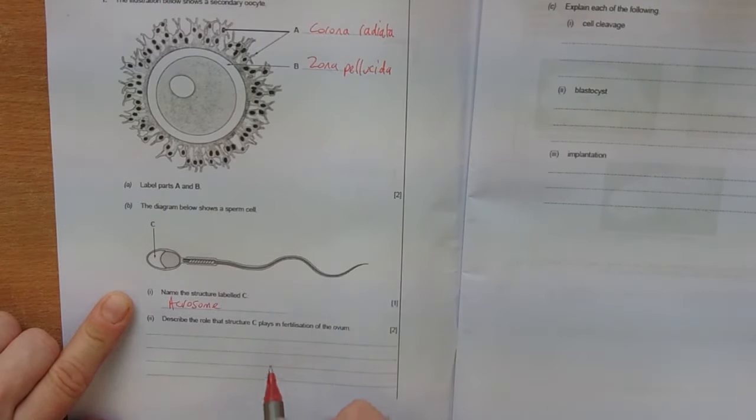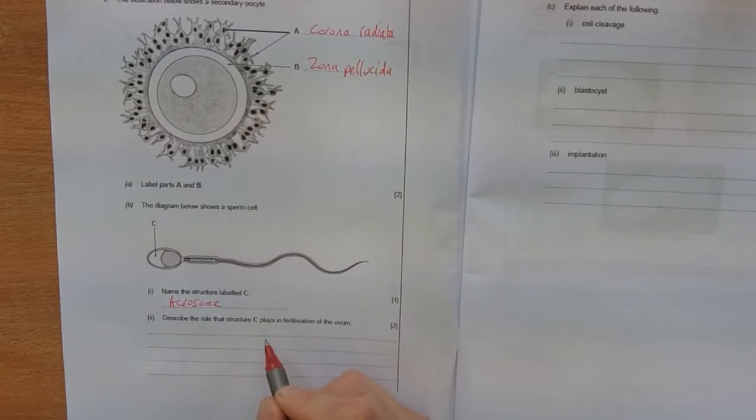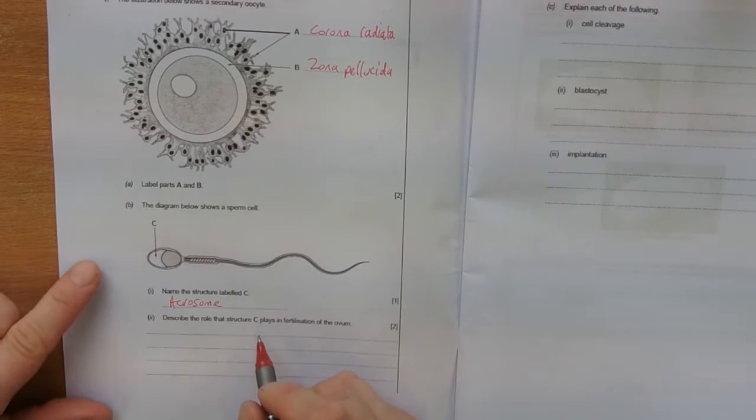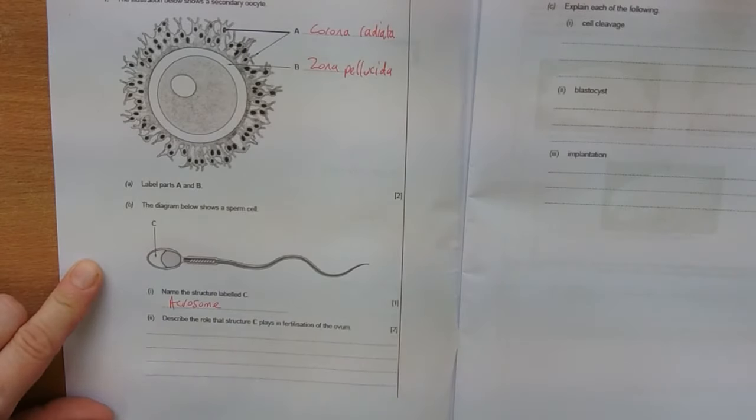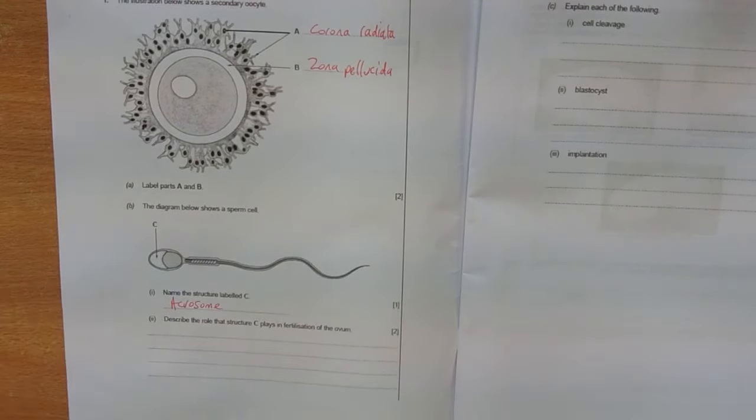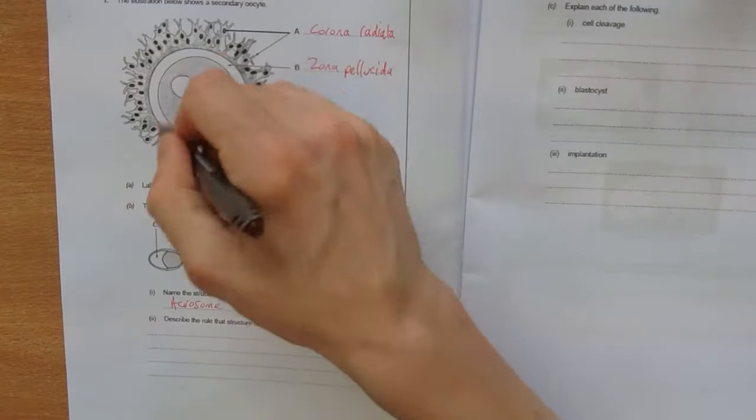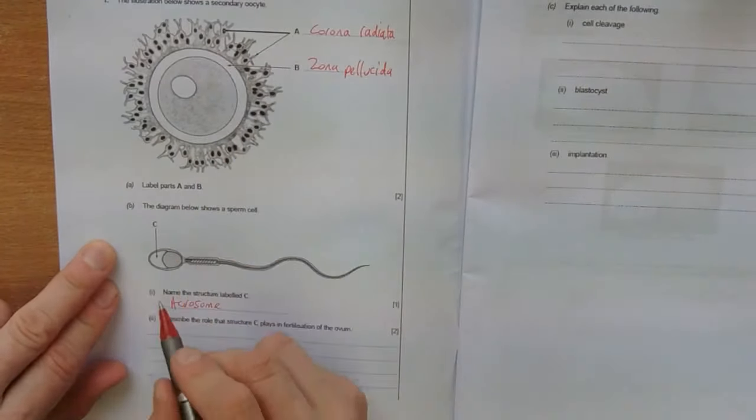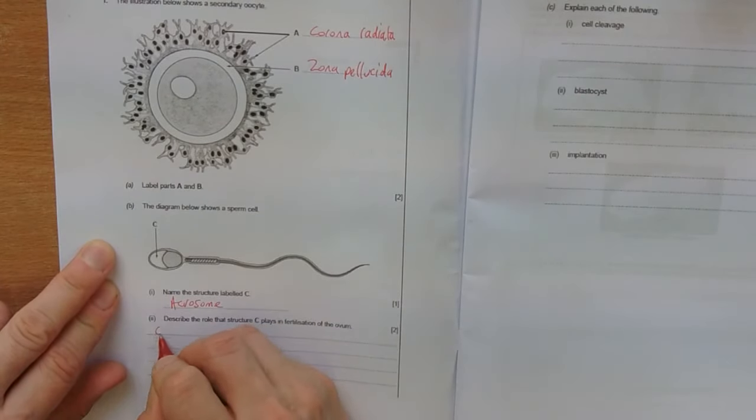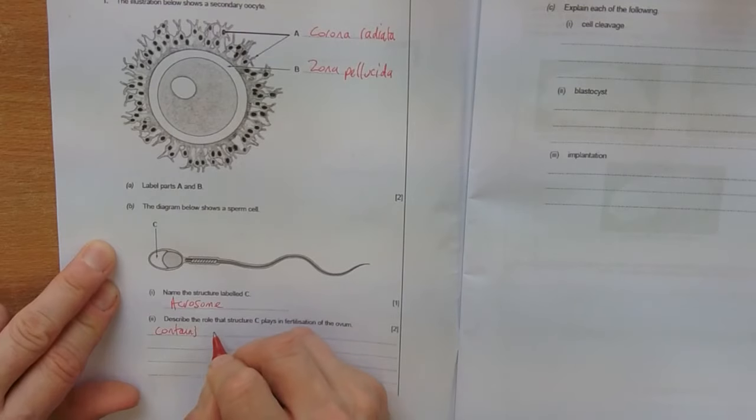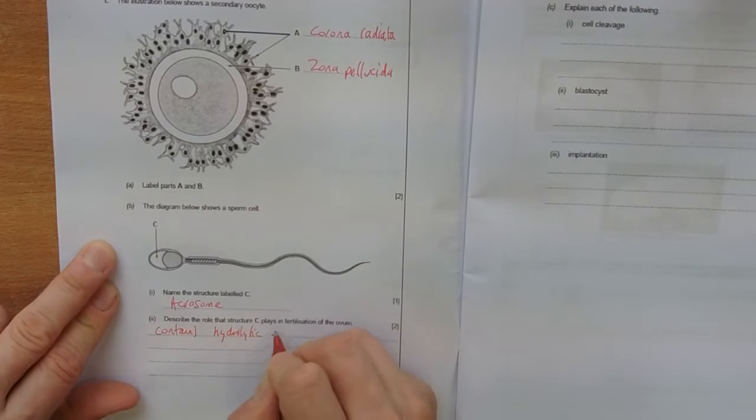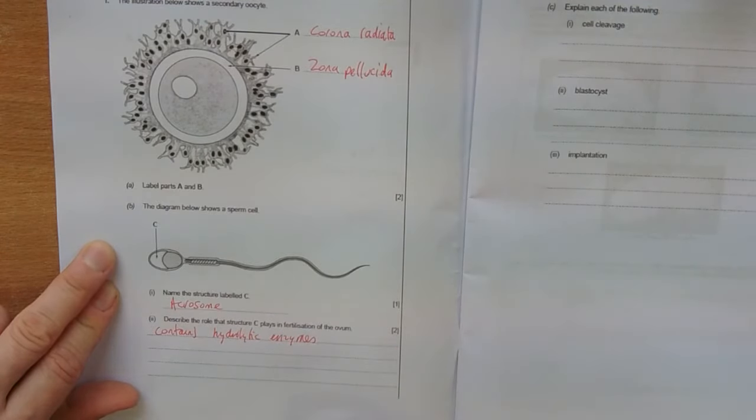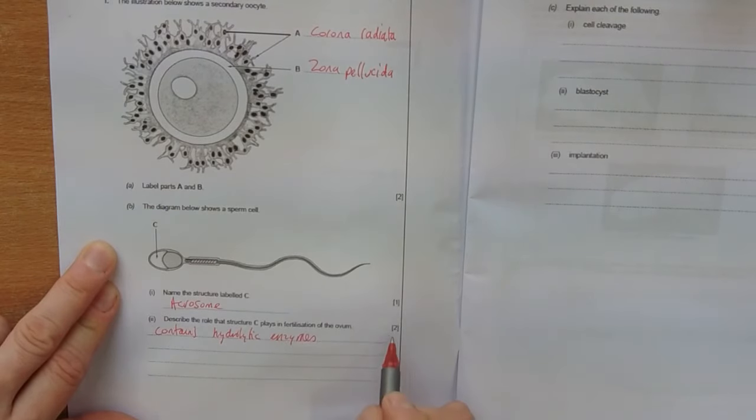And the role that structure C plays in fertilization. So what does the acrosome contain? And this contains enzymes, hydrolytic or breaking down enzymes. Enzymes that are going to break down the barriers for the secondary oocyte. So contains hydrolytic enzymes.